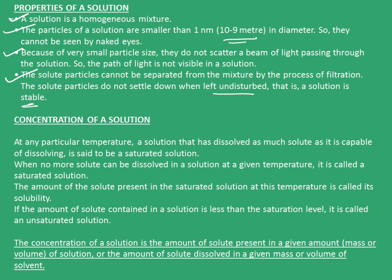Now, how do we calculate the concentration of a solution? At any particular temperature, a solution that has dissolved as much solute as it is capable of dissolving is said to be a saturated solution — that is, when no more solute can be dissolved at a given temperature. The amount of solute present in the saturated solution at this temperature is called its solubility. If the amount of solute contained in the solution is less than the saturation level, it is called an unsaturated solution.